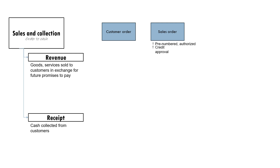The sales order has to be pre-numbered and properly authorized. The pre-numbering of the sales order helps the business determine that all orders have eventually been delivered. Prior to formalizing the customer order into a sales order, there must be an appropriate credit approval process. Businesses don't allow any and all types of customers to transact on credit — there must be a proper credit approval process to ensure a high likelihood of collecting from these customers. If the business finds out it does not have enough stocks to serve the customer's needs, the business will prepare what is called a backlog confirmation.